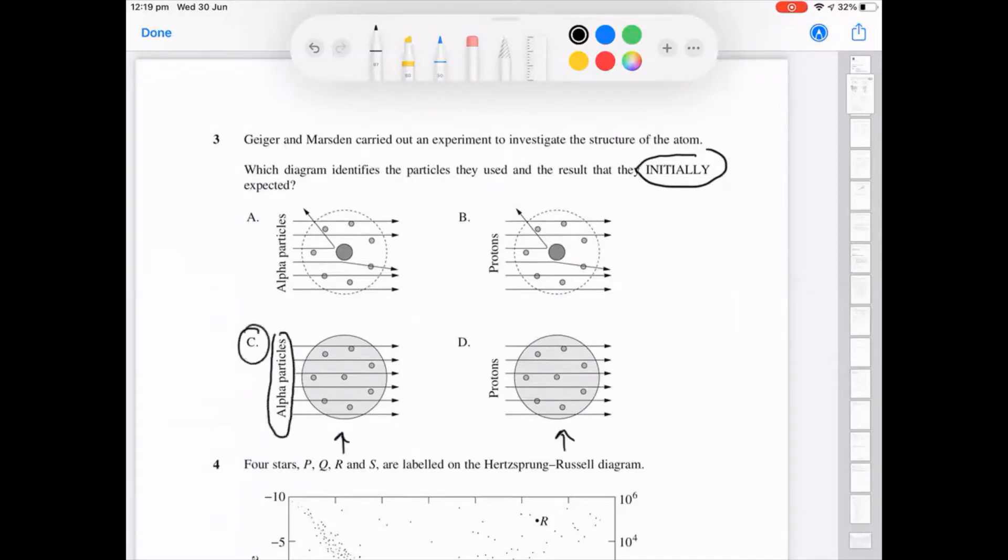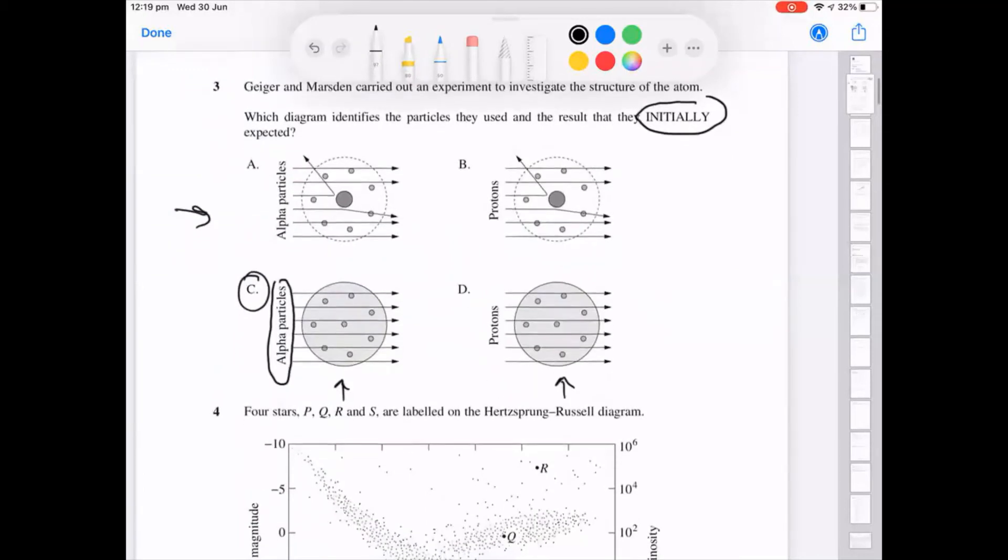So this is C, what was expected. What they did observe though was A, which is the presence of the nucleus, disproving the plum pudding model of the atom.